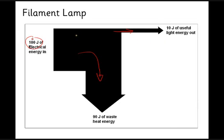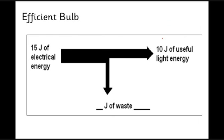This is an efficient bulb. So this is a bulb that only takes 15 joules of electrical energy. Most of that energy goes the way we want it. Only a little bit is wasted. How much is wasted? Well, you can see we've put 15 joules in, we've got 10 joules that is what we want, so there must have been 5 joules wasted.